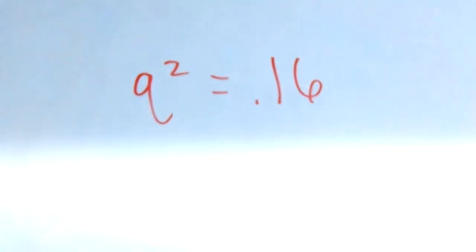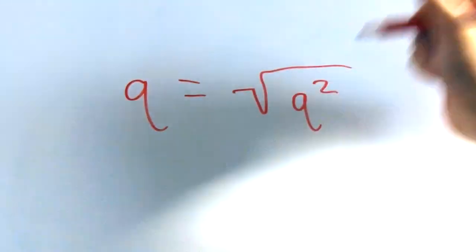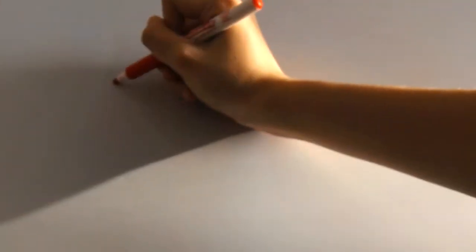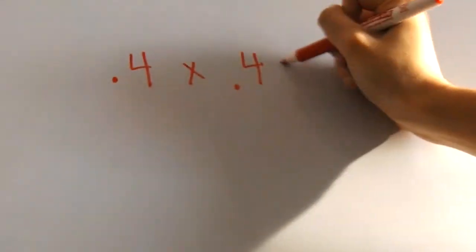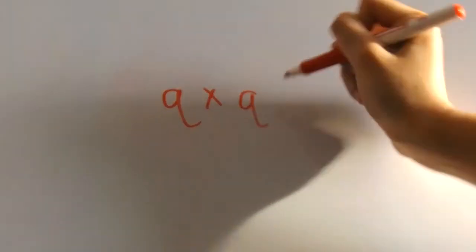Now we can work out the rest of the problem, first by finding q. q is just the square root of q squared, so the square root of 0.16 is 0.4. This makes sense because 0.4 times 0.4 is 0.16, which is the same thing as saying that q times q is q squared.